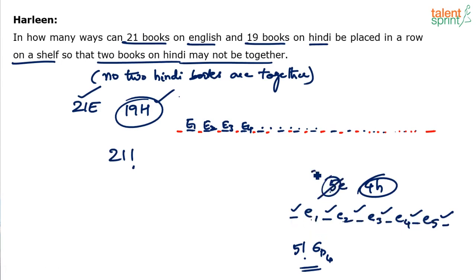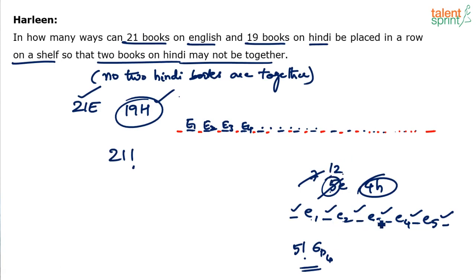The general rule: if there are n English books, the total number of available places for Hindi books is n + 1. For 7 English books, there are 8 places. For 12 English books, there are 13 places — 11 in between plus 2 extremes gives 13. So always add 1 to the number of English books.